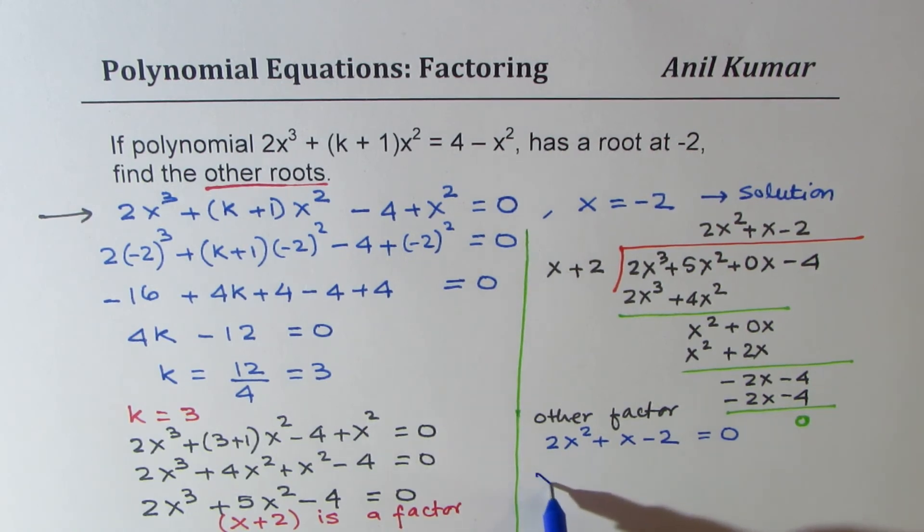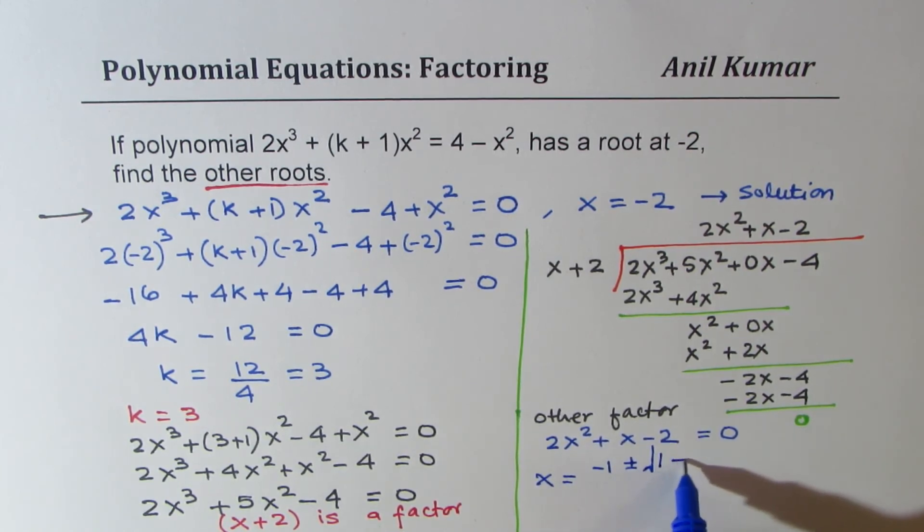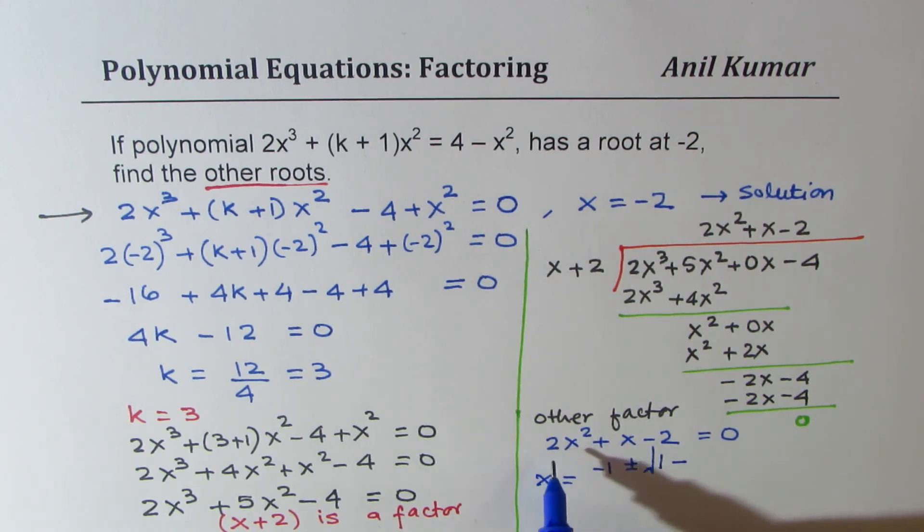So let's use the quadratic formula. So we get x equals to -b, which is -1, plus minus square root of b², which is 1, minus 4ac. So which is -4 times 2, 8, 8 times 2, 16, with a negative sign, it becomes +16, divided by 2 times a, which is 4.